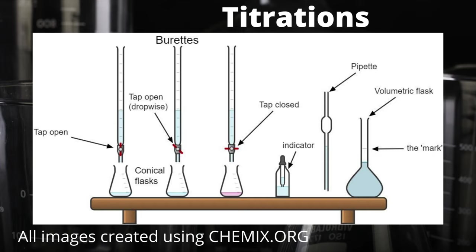I want to start talking about the burette. I've drawn the burette three different times because I want to focus on how we use the tap at the bottom of the burette to control the amount of solution that passes through. On the left-hand side the tap is labelled as open — it's when the tap is in line with the actual burette column. As we start to turn the tap slightly away from this, the flow of solution through the burette starts to slow down and we can actually control it to a dropwise standard, which is absolutely crucial to be able to do in a titration procedure.